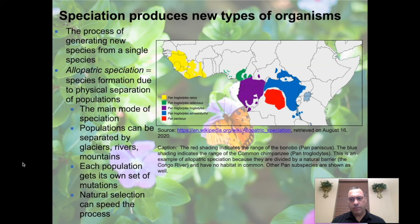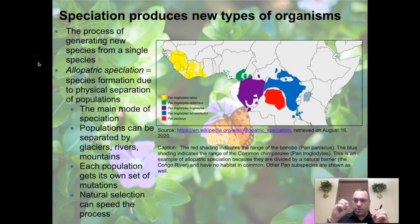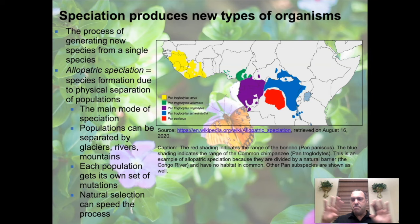If evolution constantly takes old forms and makes new ones, there must be a point where a new species comes into existence — we call that speciation. Speciation produces new types of organisms from a single species, with descendants branching out into different types in different locations. The main mode is allopatric speciation: species formation due to physical separation of populations by some kind of barrier.